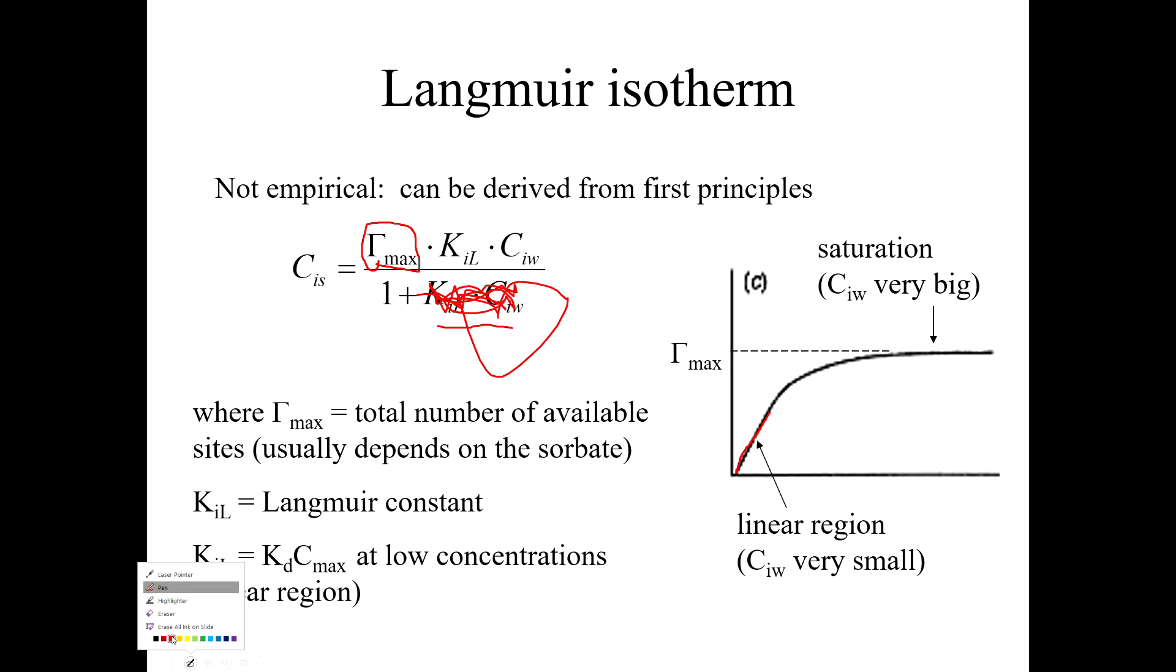But now through the magic of television, I will erase all ink on my slide and do this again. What if KL times CW is much, much greater than 1? So that the 1 part can be ignored and we can just go away. Well, if that's true, then KL cancels and CW cancels and we're left with CS is equal to gamma max, i.e. CS is just constant. And that's this region over here. That's how you get this very classic shape. And again, very similar to Michaelis-Menten kinetics and lots of other kinds of relationships that we might see in the environment.